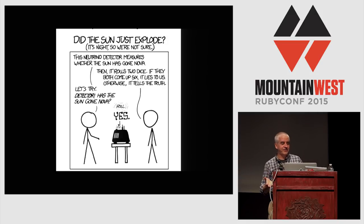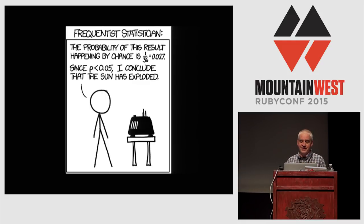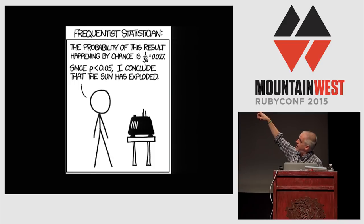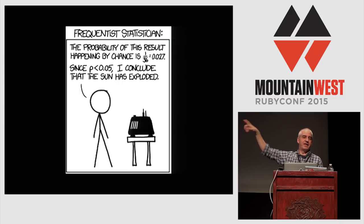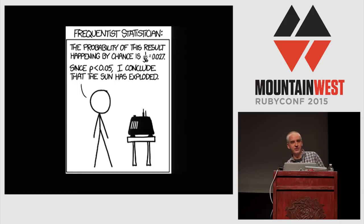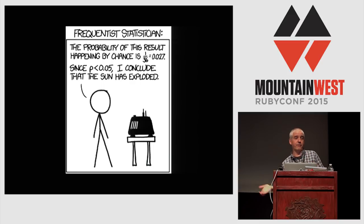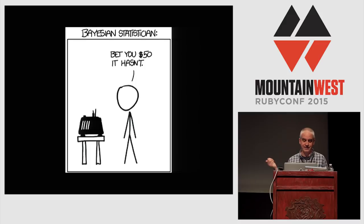Let's say you've got a neutrino detector and you're trying to figure out if the sun has exploded. A traditional frequentist statistician would say: there's a 1-in-36 chance the detector is lying, but that's less than 5% significance, so if the box says the sun exploded, the sun exploded — ignoring his prior knowledge that the sun has not exploded for every day the Earth has existed. Whether the Earth has been around for a little over 4,000 years or billions of years, the chance of the sun having exploded is really low. A Bayesian would probably say 'betcha it hasn't,' because he's much more likely to be right.